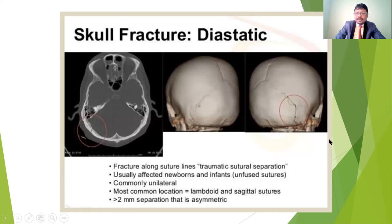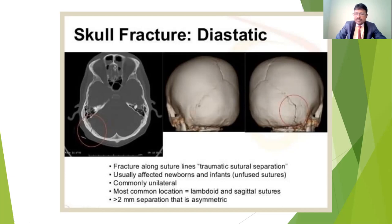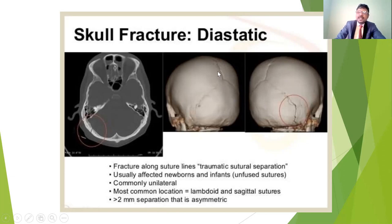Another fracture type is the diastatic fracture — fractures occurring at the suture areas such as coronal sutures, frontal sutures, and occipital sutures. If any separation occurs between the sutures, it is called a diastatic fracture. This is most commonly seen in infants who get an injury. These are traumatic suture separations, most commonly affecting newborns and infants because their sutures are not completely fused. The most common location is the lambdoid and sagittal sutures. More than 2 mm of suture separation is classified as a diastatic fracture.